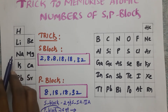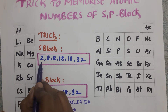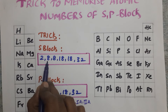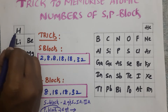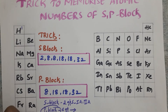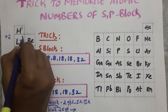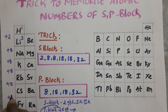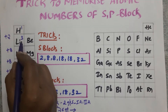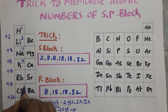Group 1 includes hydrogen, lithium, sodium, potassium, rubidium, cesium, and francium. The trick for s block elements is we need to add 2, 8, 8, 18, 18, 32 electrons successively. Hydrogen's atomic number is 1. Lithium: 1 plus 2 equals 3. Then 3 plus 8 equals 11, 11 plus 8 equals 19, 19 plus 18 equals 37, 37 plus 18 equals 55, and 55 plus 32 equals 87.